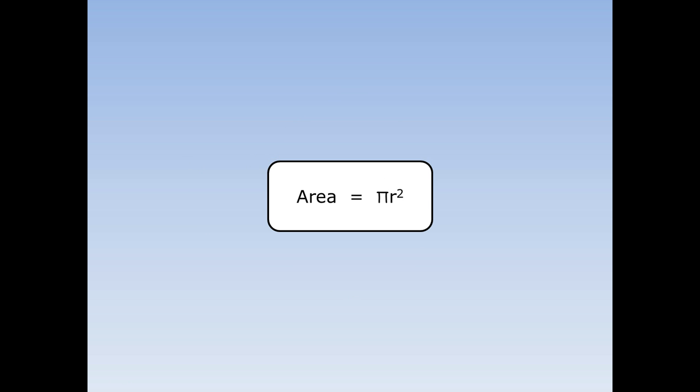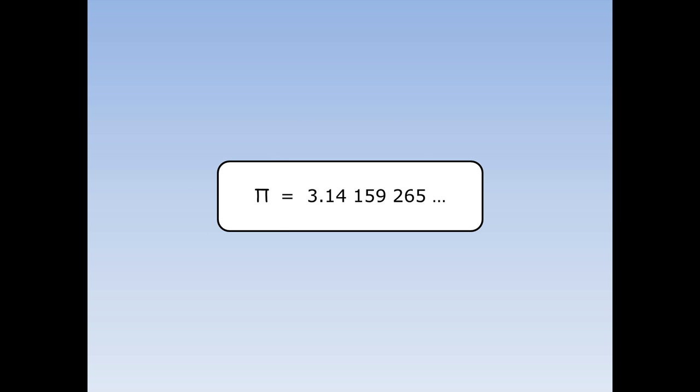The area of a circle is pi r squared. This means pi times the radius times the radius. But what is pi? Pi is a special number: 3.14159265, and in fact it goes on forever. But to make things easy, we are going to use pi is equal to 3.14.